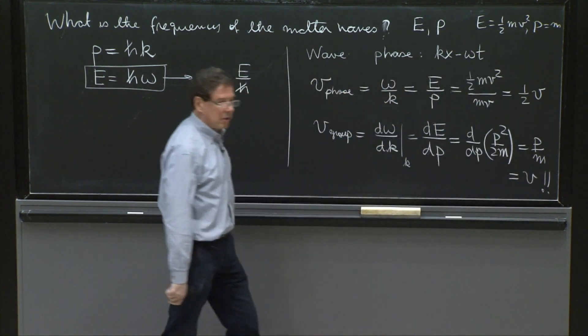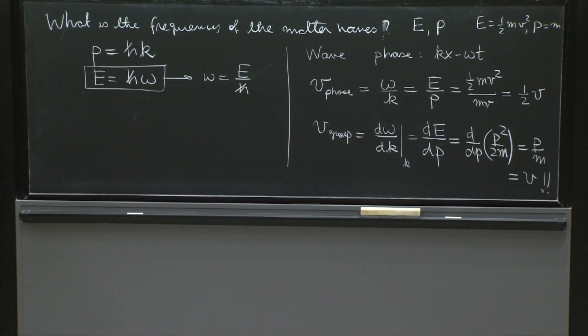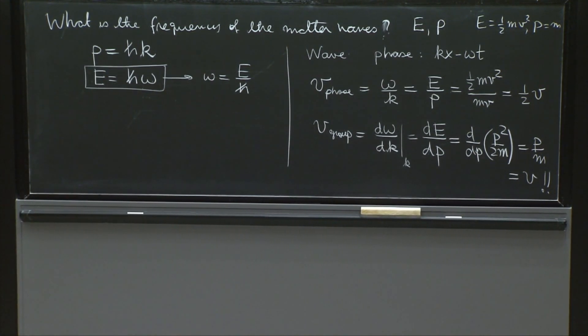And this is the reason people believed de Broglie. De Broglie made sense because the group velocity of this packet would be correct. And that's a very beautiful result. Actually, it's true relativistically as well. If you put the energy and the momentum in relativity, this answer comes out exactly the same. Perfectly well.